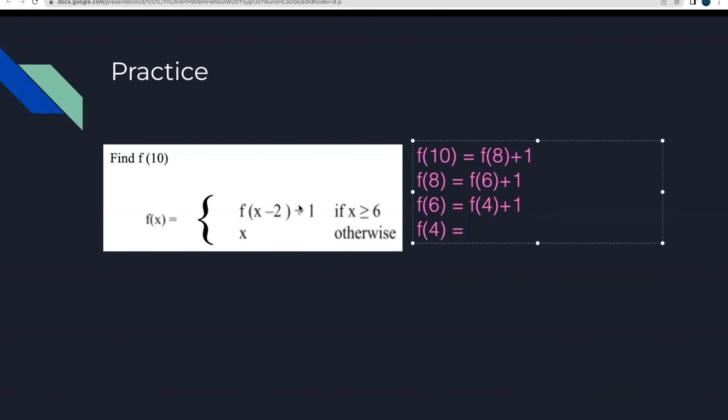Now, f of 4 falls into this otherwise category. And it says just to return this x. And x is 4, so we're just going to replace it with that. I'm going to replace f of 4 with 4 here, solve for f of 6, replace f of 6 with 5, solve for f of 8. f of 8 is going to be replaced with 6. And f of 10 will be equal to 7.